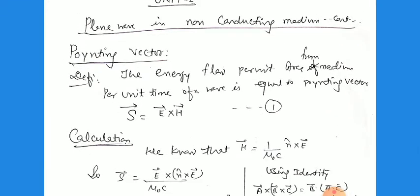As earlier in the junior classes, we have discussed the Poynting vector. What is the definition of the Poynting vector? The energy flow per unit area per unit time of the wave is equal to the Poynting vector — that is, for any surface. So S = E × H, where E is the electric field and H is the magnetization field.